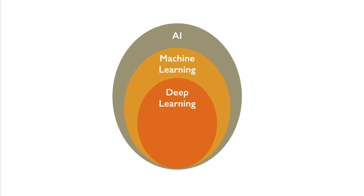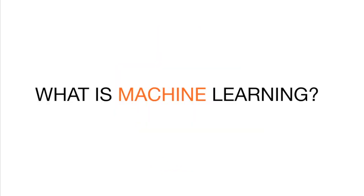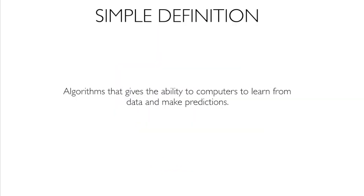In a broader spectrum, if you think of artificial intelligence as the main umbrella, machine learning is a subset of AI — that's how AI has been happening in the last 20 years. But deep learning is a new subset of machine learning that has come into existence pretty recently, and it has revolutionized and changed the way artificial intelligence works.